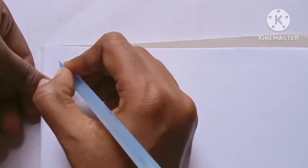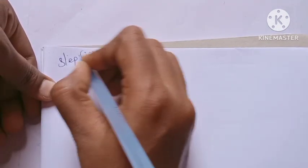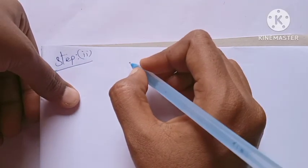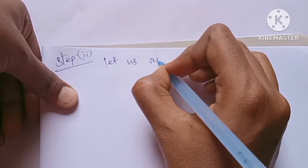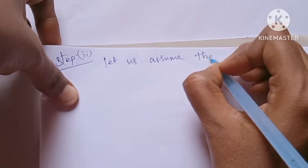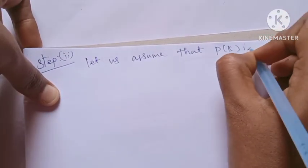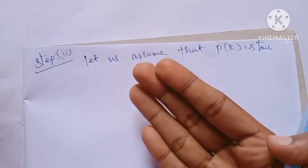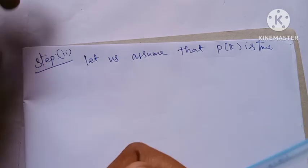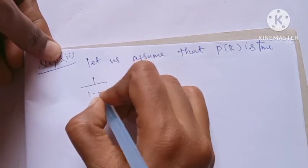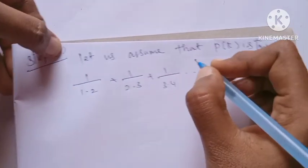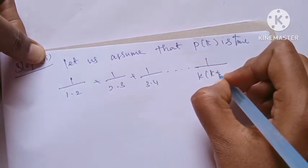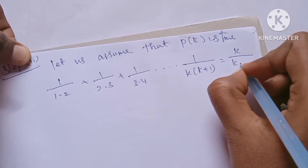Step 2: Let us assume that P(k) is true. So the sum 1 by 1.2 plus 1 by 2.3 plus ... up to 1 by k into k plus 1 is equal to k by k plus 1. Okay.